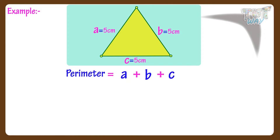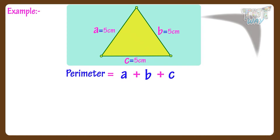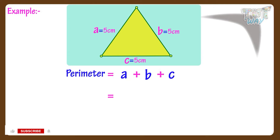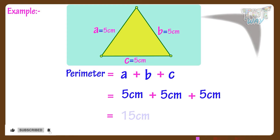Here A, B and C are lengths of sides of the triangle, and here A, B and C all equal 5 — that is, all sides measure 5 centimeters. So perimeter is equal to 5 plus 5 plus 5, which equals 15 centimeters.